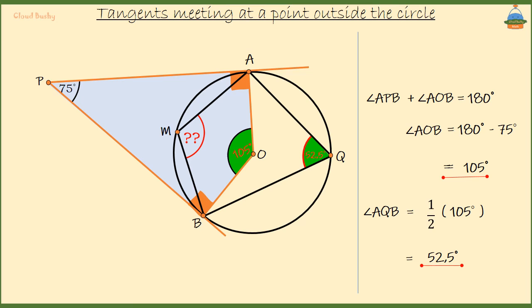Lastly, we want the size of angle AMB. Now, AQBM is a cyclic quadrilateral. That means angle Q and angle M are opposite angles in a cyclic quadrilateral.